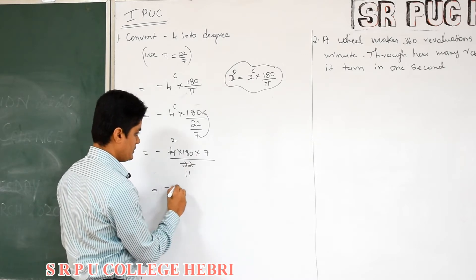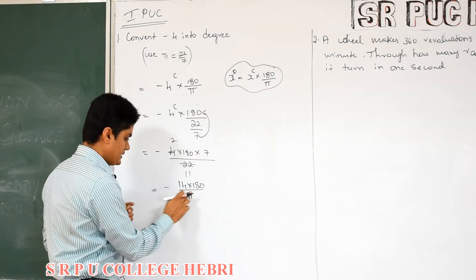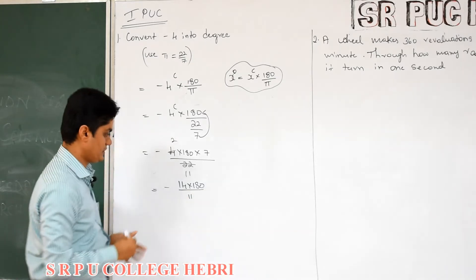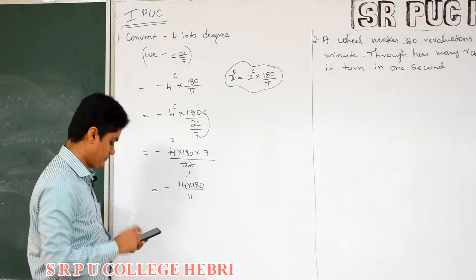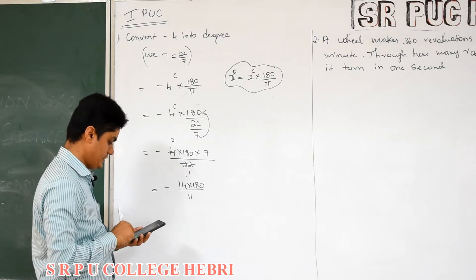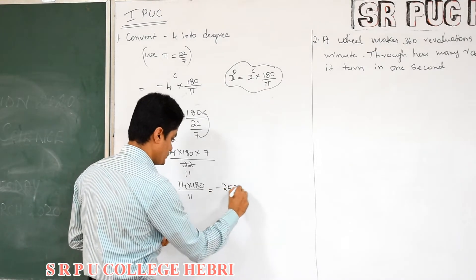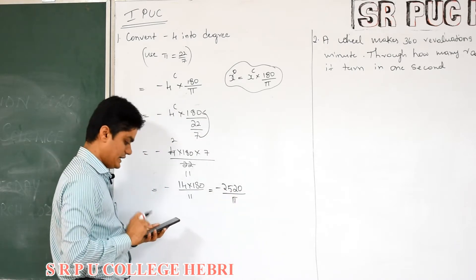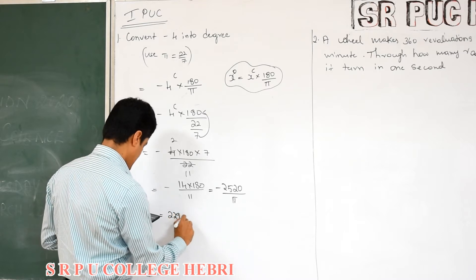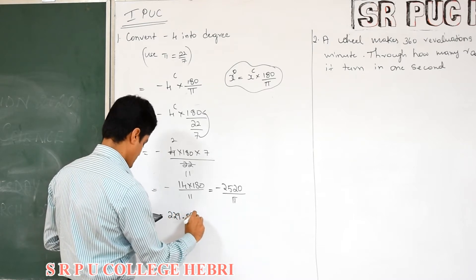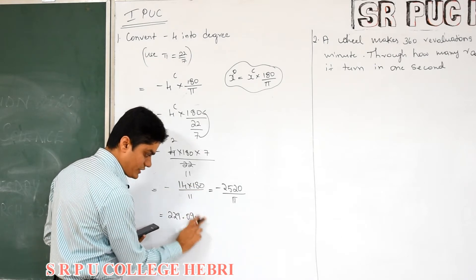So, 7 into gives 14, then 180 by 11. Now you require a calculator to simplify this. First multiply 14 into 180, you get 2520, then 2520 divided by 11. So the answer divided by 11 will be 229.09. When you approximate, 0.9 will become 1.